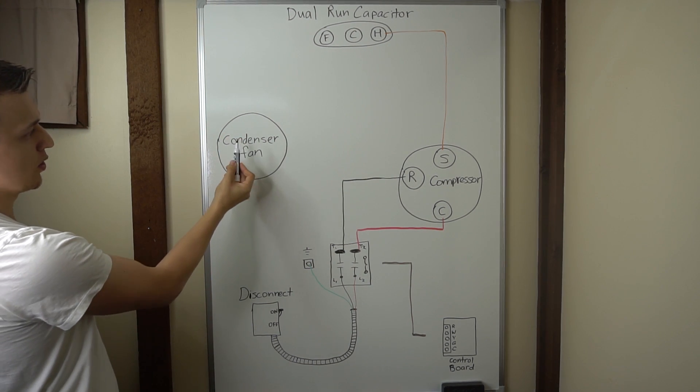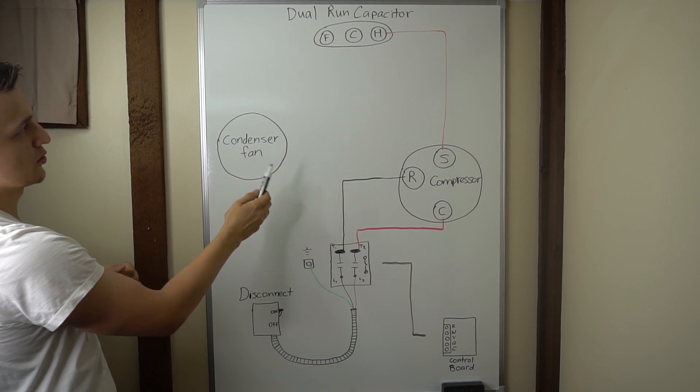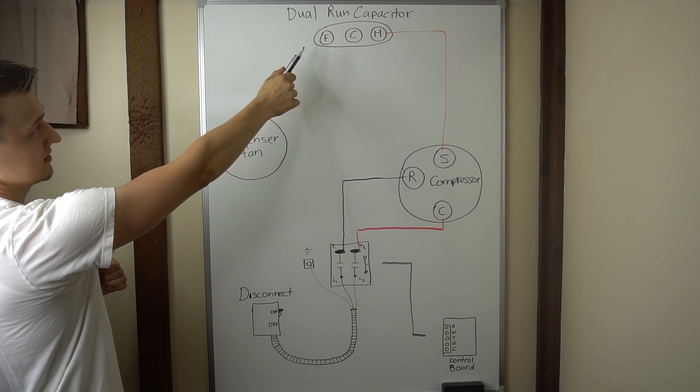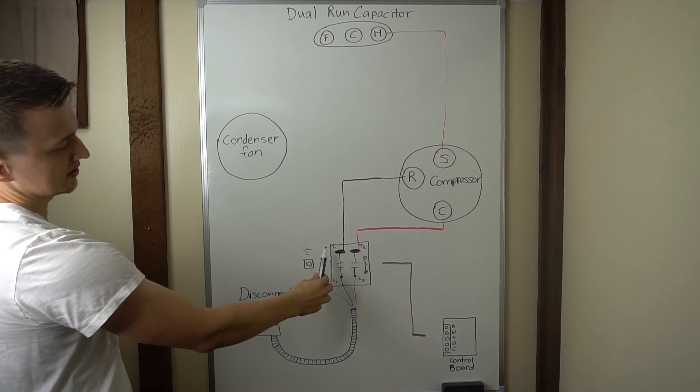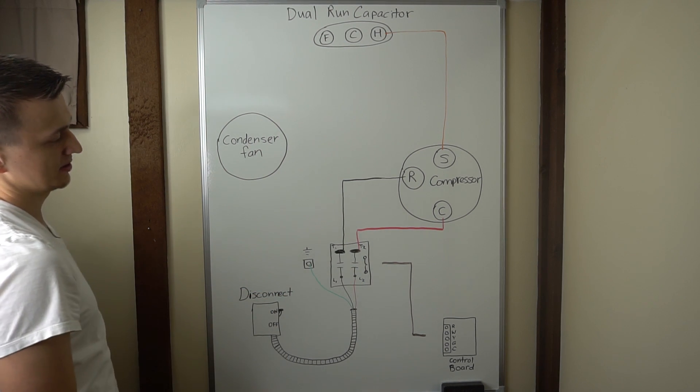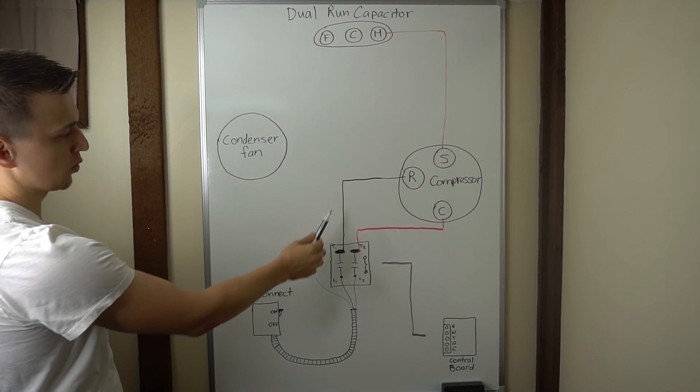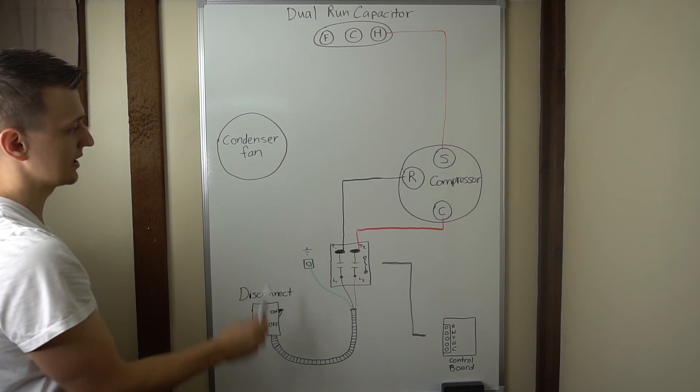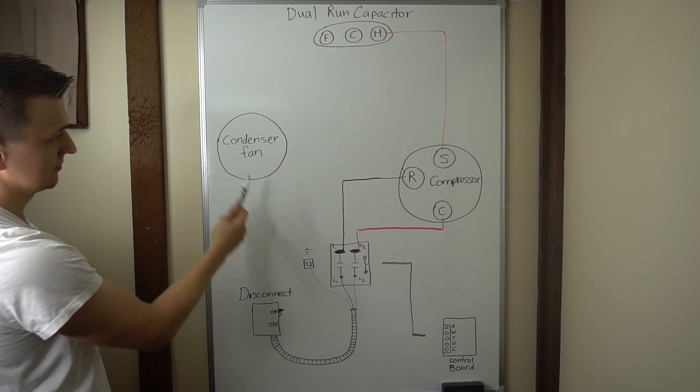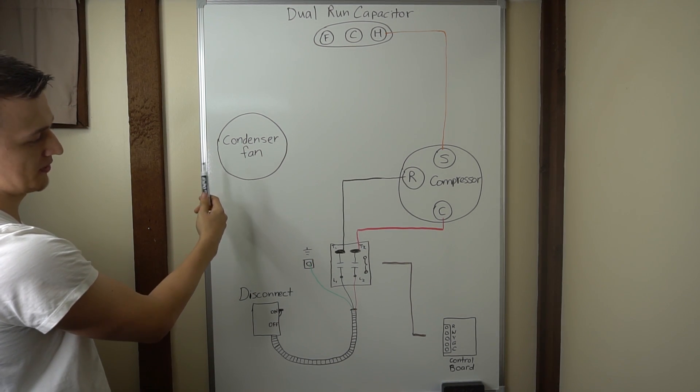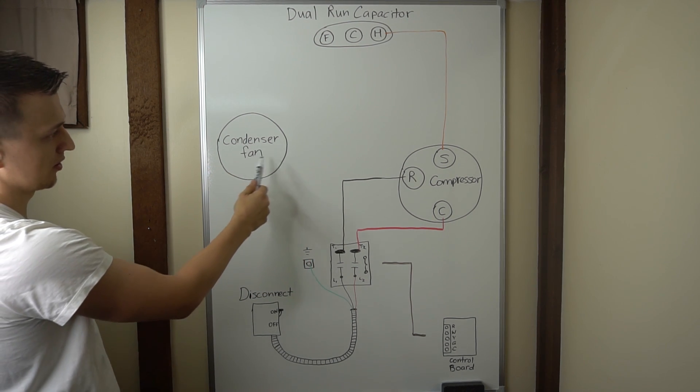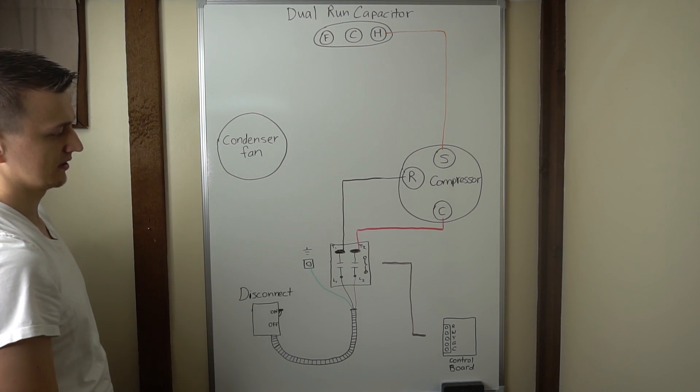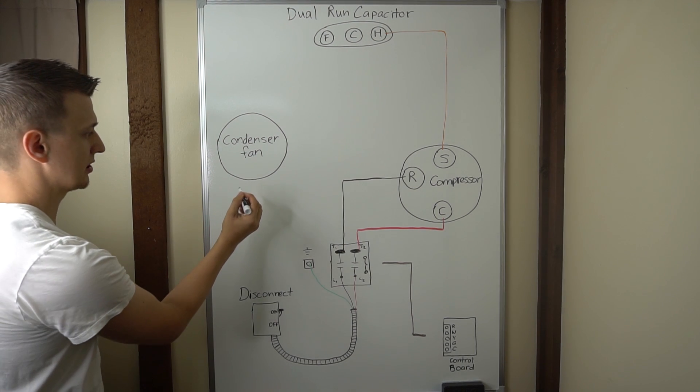And once again, just like the compressor, one wire, which is typically either brown or purple, will go to the fan on the dual run capacitor. And the other two wires have to go on either side of the contactor. And if possible, I like to keep the wire colors on the same side of the contactor. So the black that comes from the compressor should also be the black that comes from the fan motor and goes to the same side. And hopefully there's a red or whatever other color that can go to the other side of the contactor.